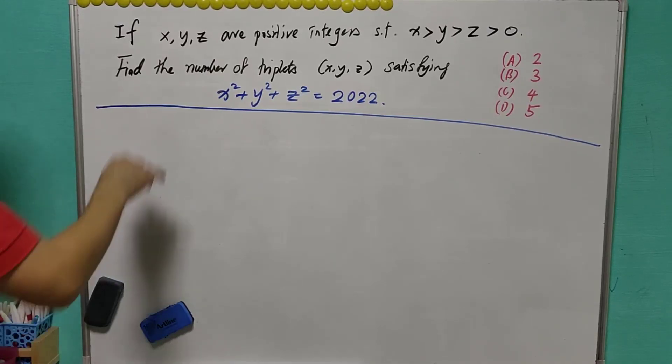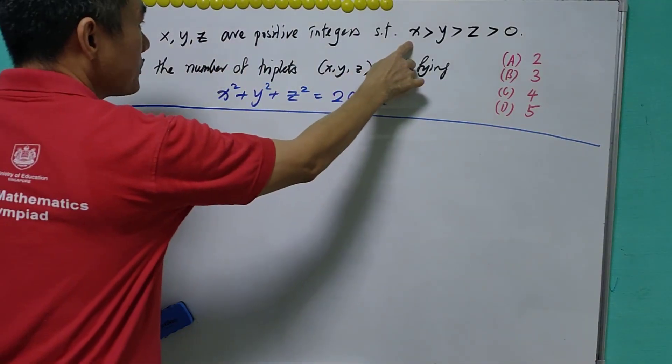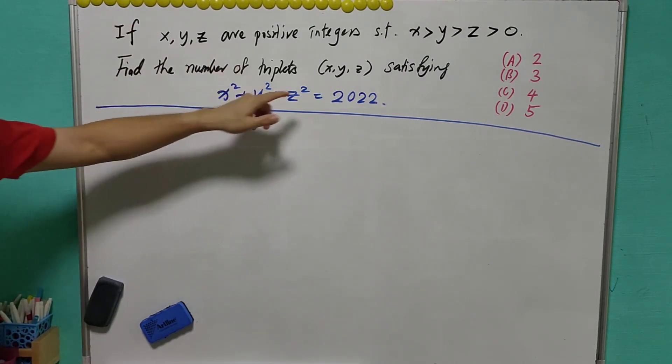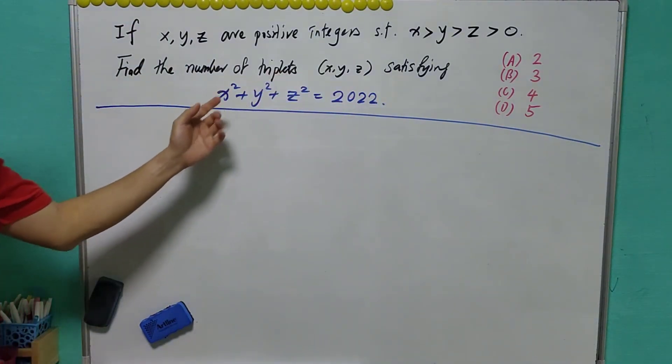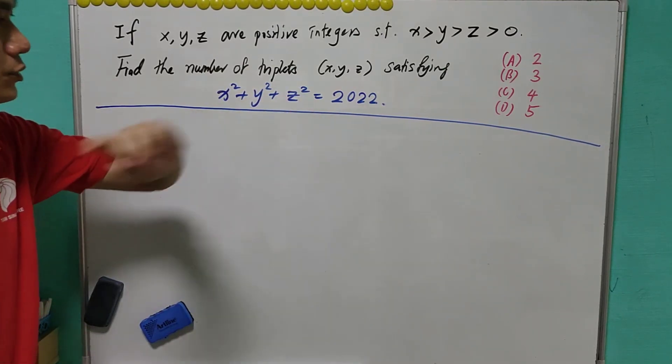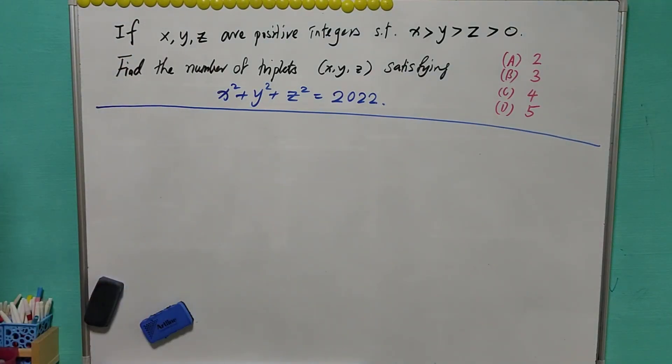In today's question, if x, y, z are positive integers such that x is greater than y, greater than z, greater than zero, you are asked to find the number of triples x, y, z satisfying x square plus y square plus z square equals to 2022. And the options are a2, b3, c4, and d5. What do you think?